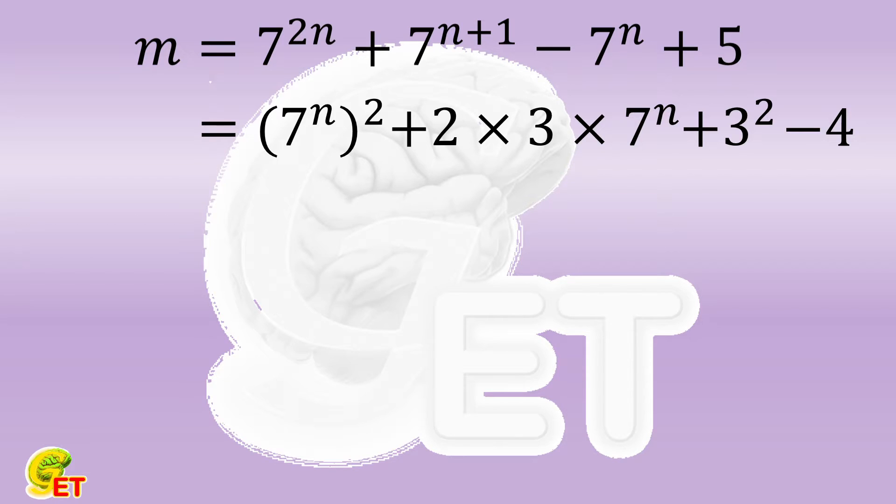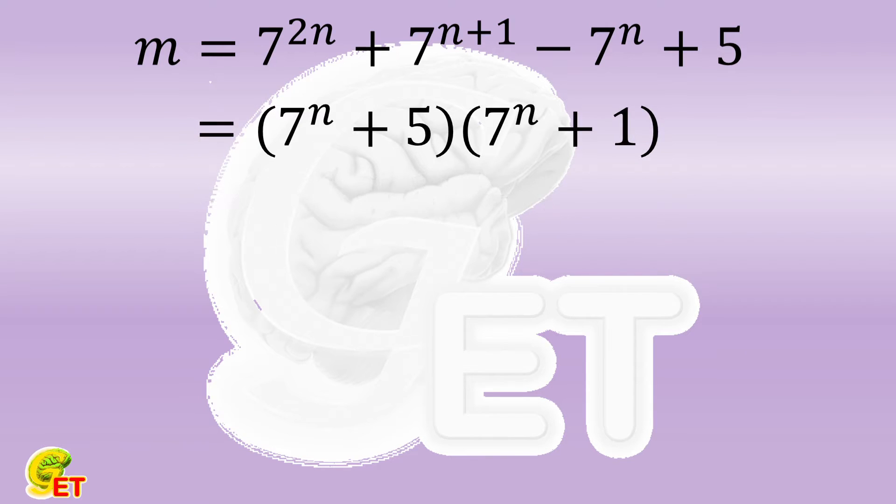This becomes the square of 7 to the power of n plus 3 minus 4. 4 is the square of 2, so we can apply the formula for the difference of squares. 3 plus 2 equals 5, and 3 minus 2 equals 1.